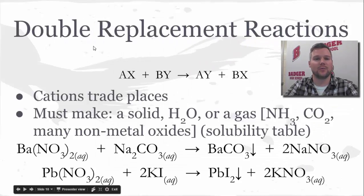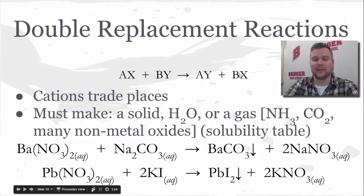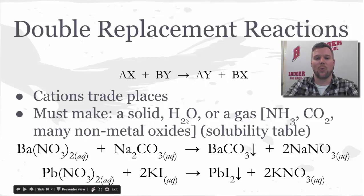That moves us to double replacement reactions. Two particles are switching — specifically the two cations. A and B trade spots to make AY plus BX. This will only occur if at least one of the products is a gas, water, or a solid. Common gases that form include NH3 and CO2, as well as some non-metal oxides. Water, of course, is H2O, and a solid precipitate will also drive the reaction to completion.